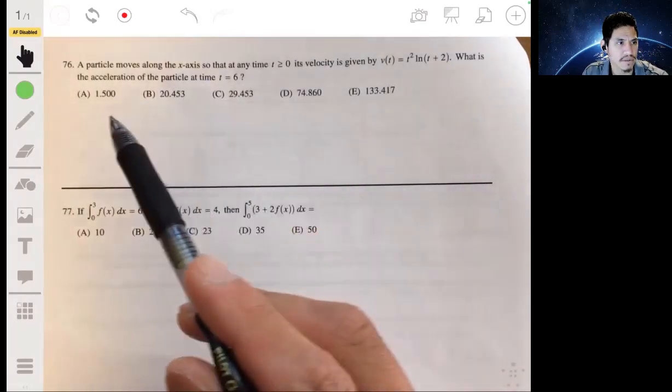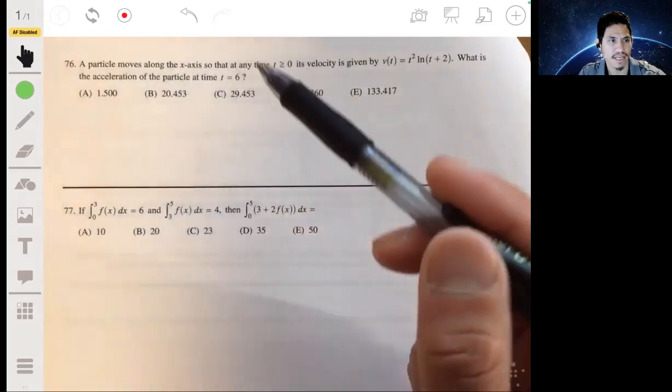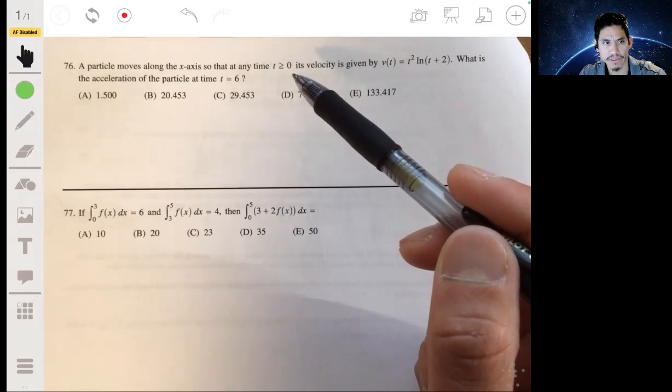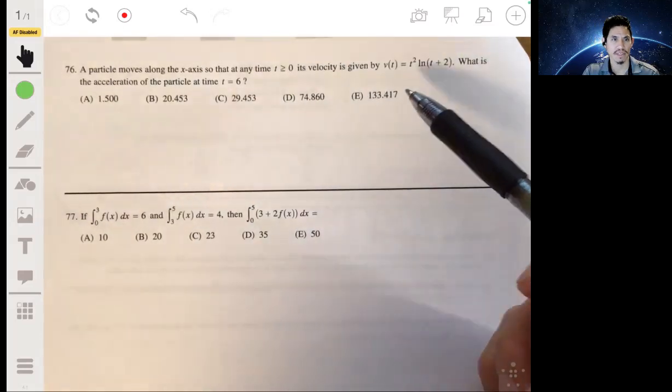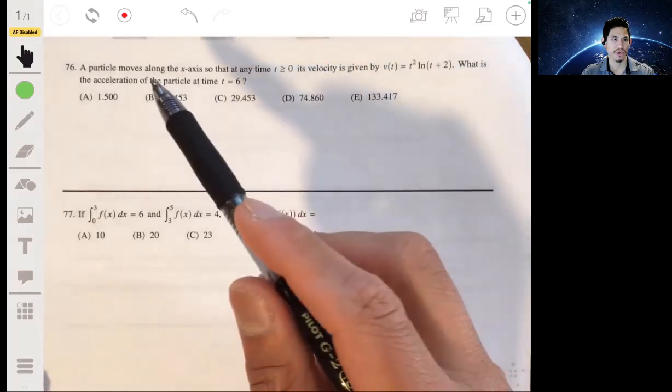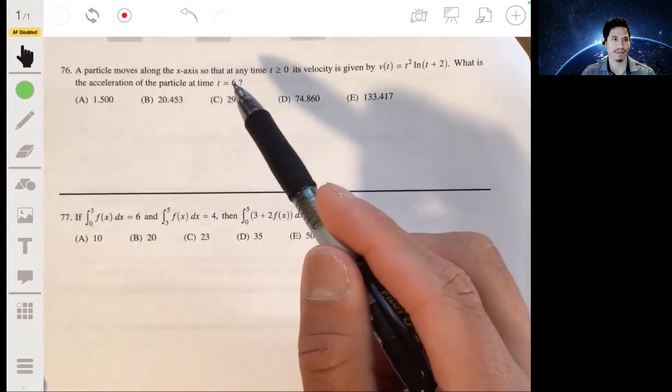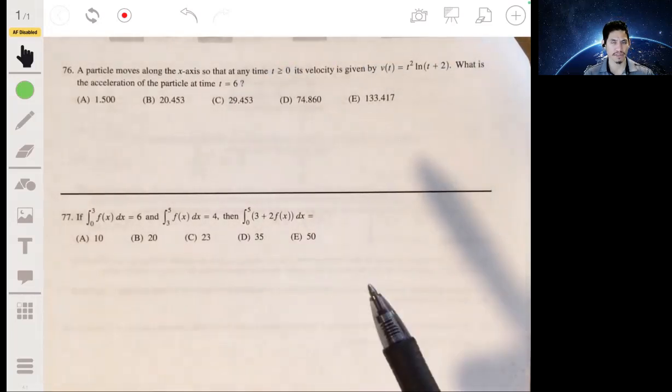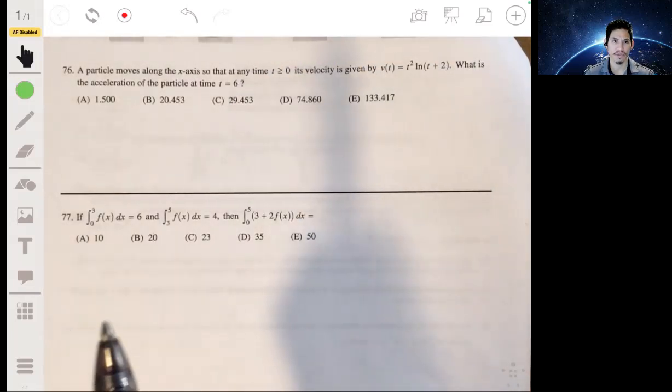Alright, so problem 76. We have a particle that moves along the x-axis so that at any time t greater than or equal to zero, its velocity is given by this equation. It's asking for what's the acceleration of the particle at time t equals 6.